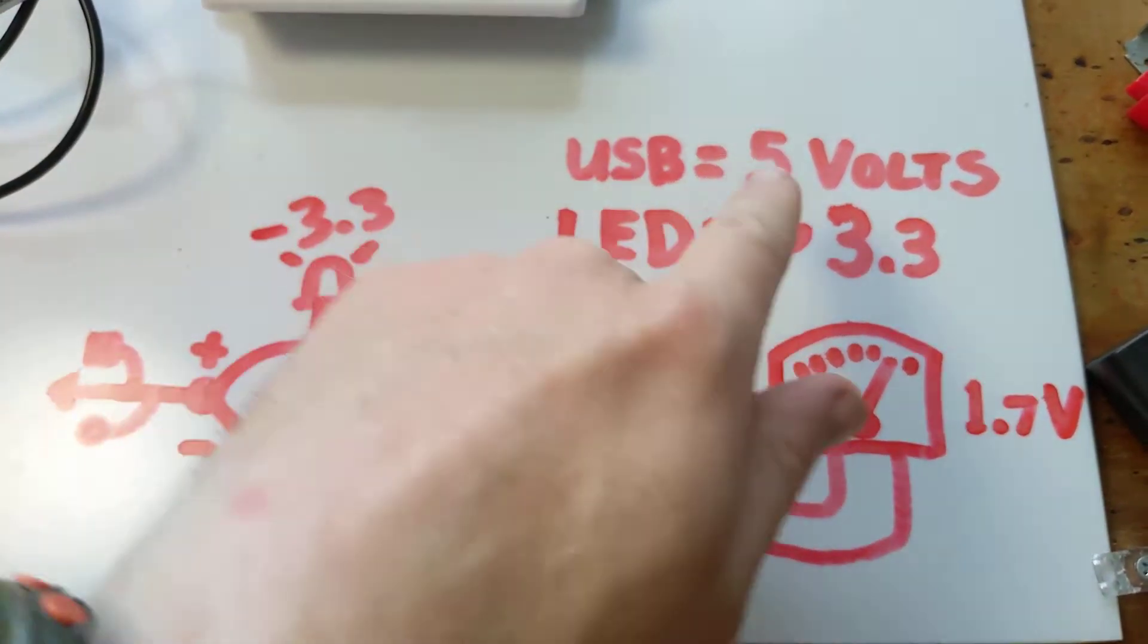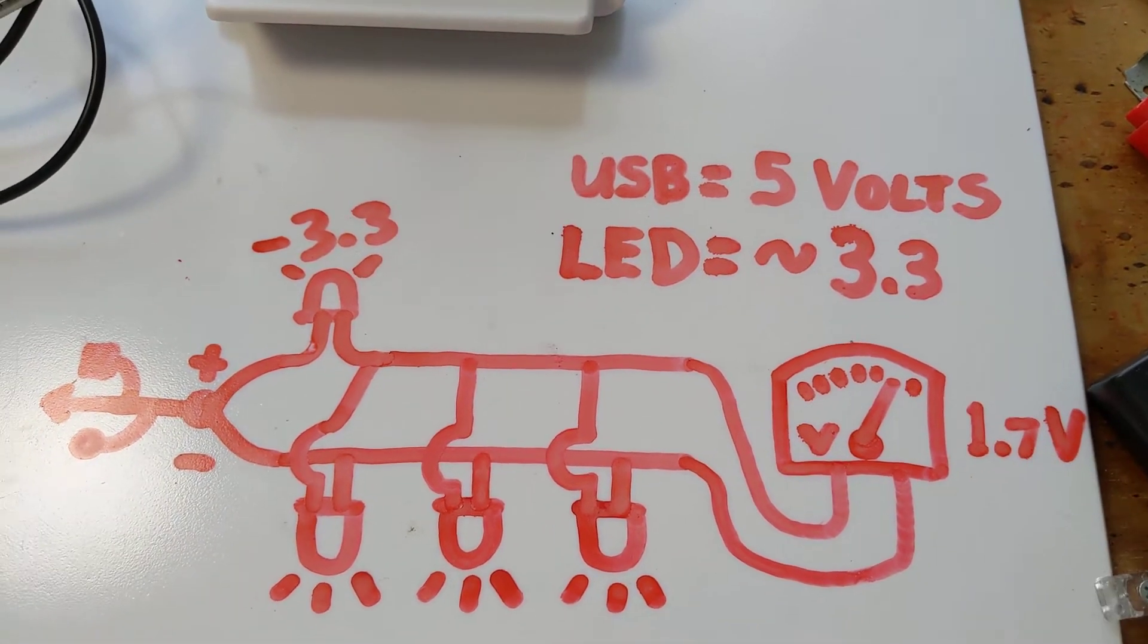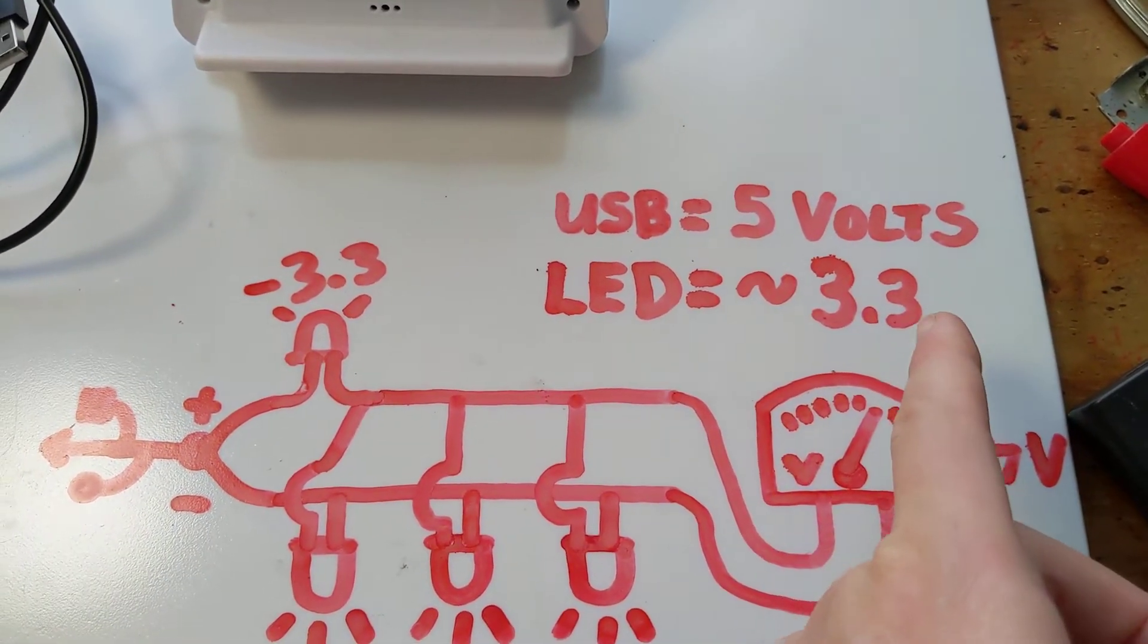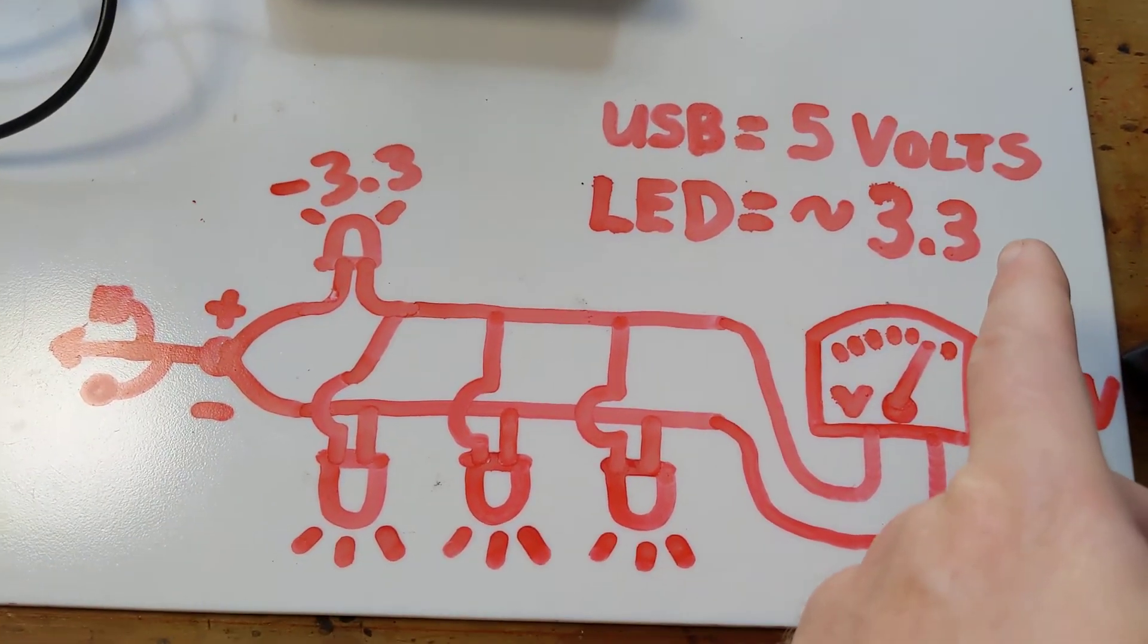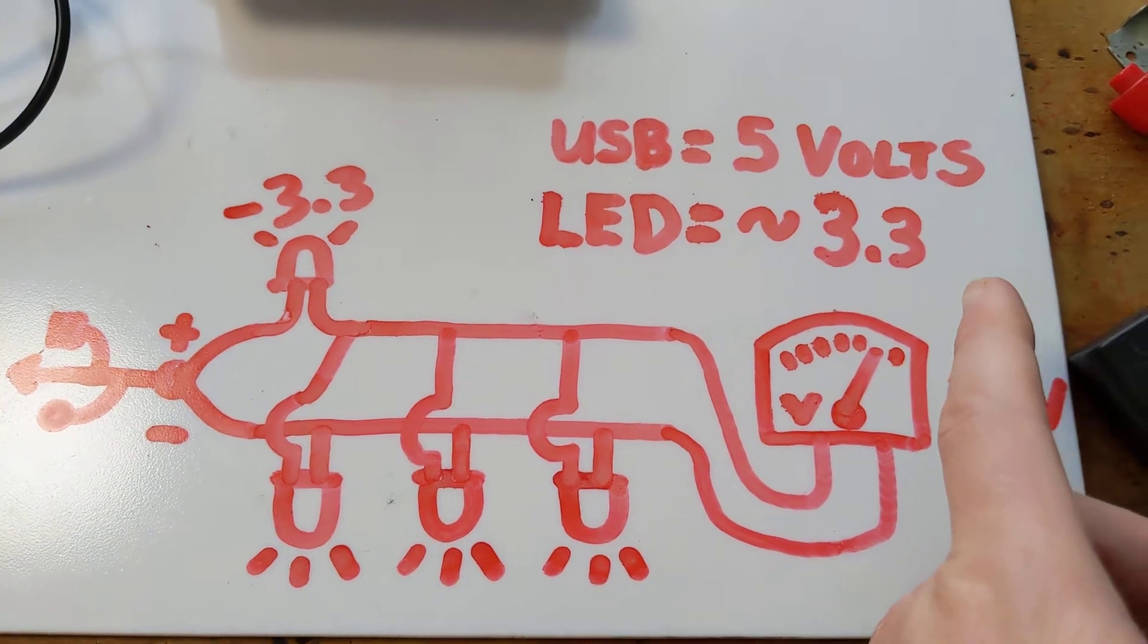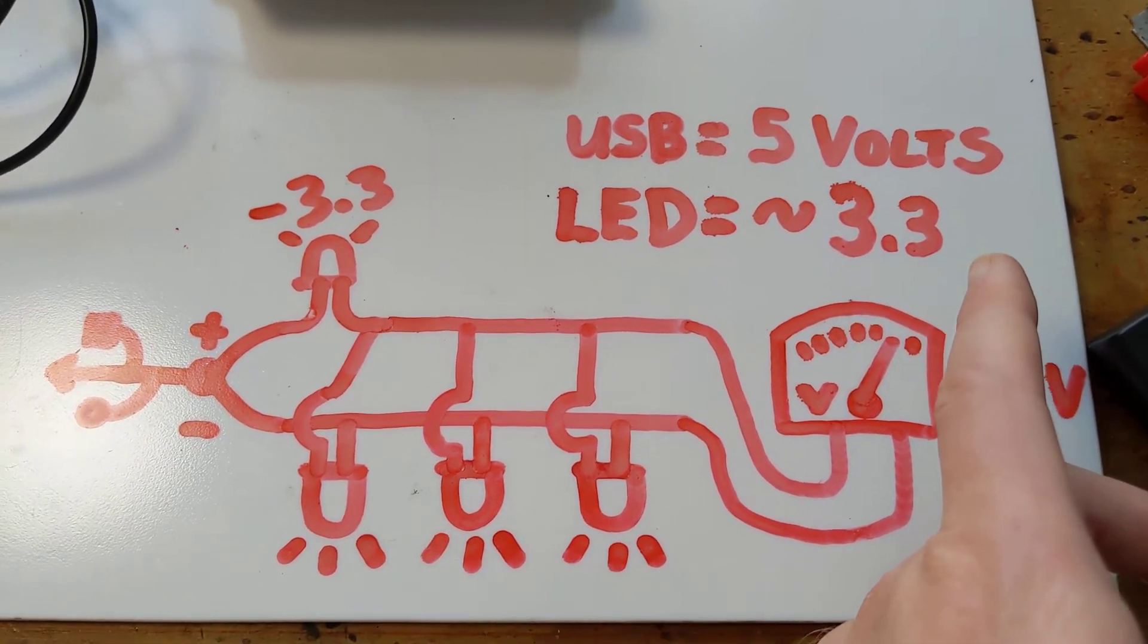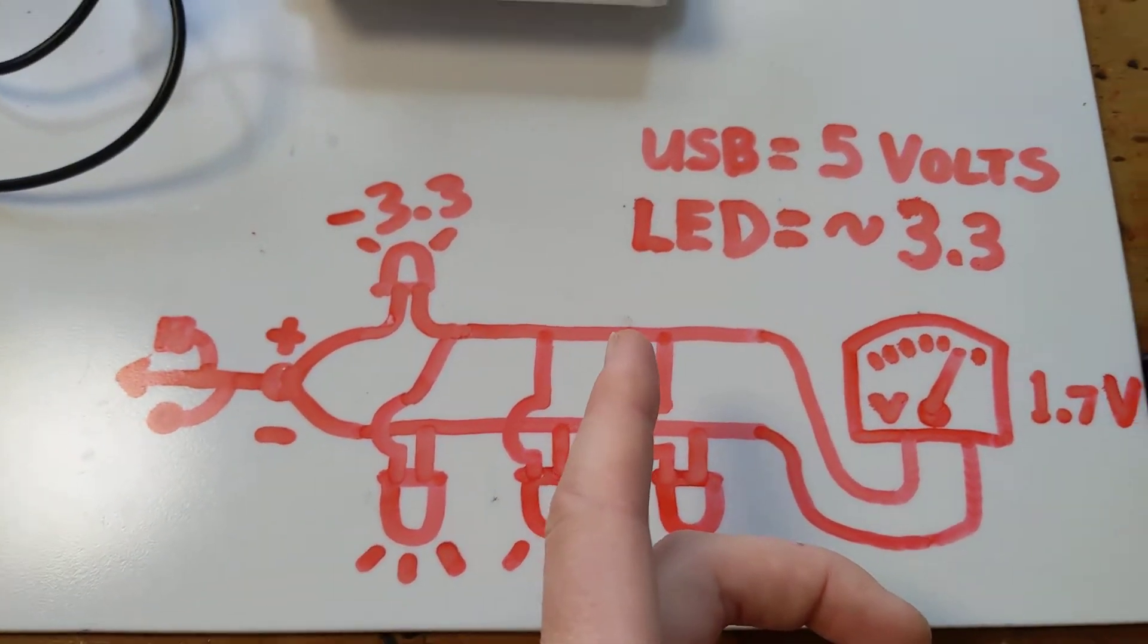So USB, 5 volts, that's 1.7 volts over your average standard LED voltage. So if you directly wire LEDs to the 5 volts of USB you're going to burn out your bulbs, which sucks. So how do we get that voltage down to something that the LEDs can handle?